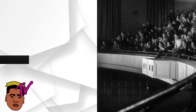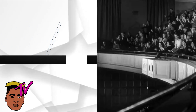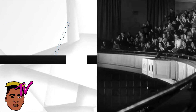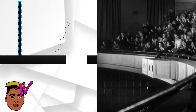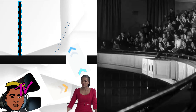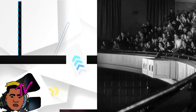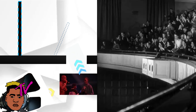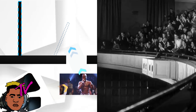So how the hologram works: you angle glass towards the audience in front of a dark background so the audience won't see the glass. Then you shine a light on an actor below the stage, and the light reflects up onto the angled glass. In Tupac's case though, it was a completely CGI character played on screen — pretty cool actually.